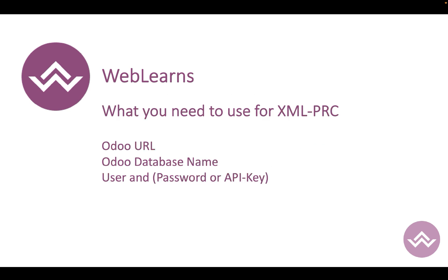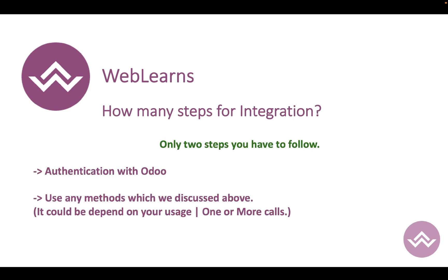Let's say you're using the Django framework and want to integrate with Odoo to perform CRUD operations on customers and sales orders. To set up such an integration, you need four pieces of information from whoever manages Odoo: the Odoo URL, the database name, the username, and the password. If a password is not provided, you can use an API key instead.